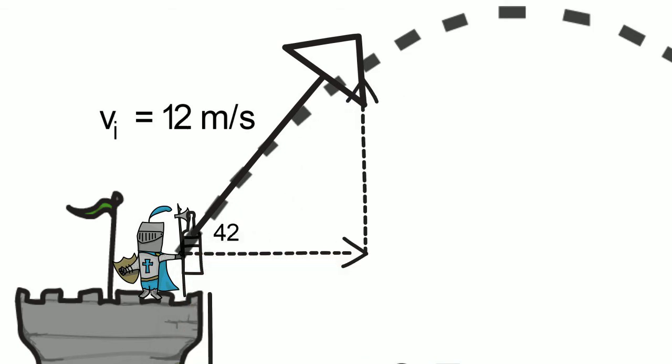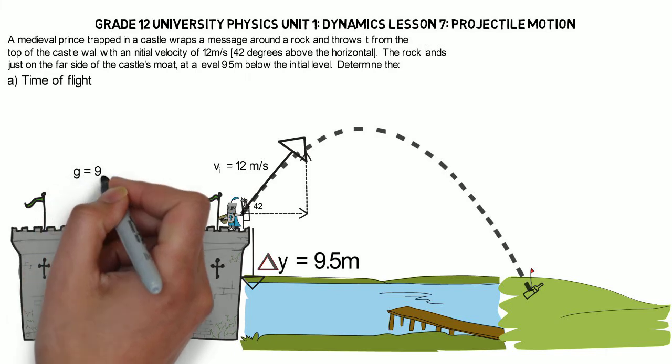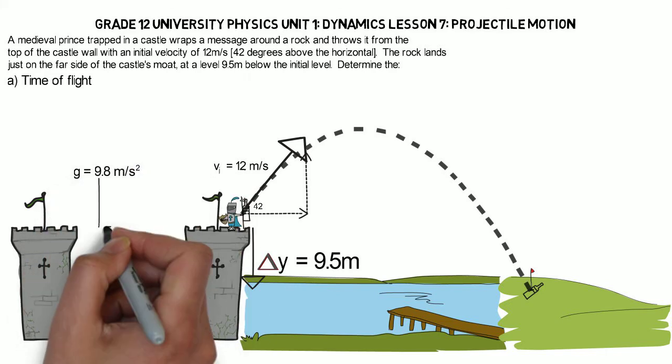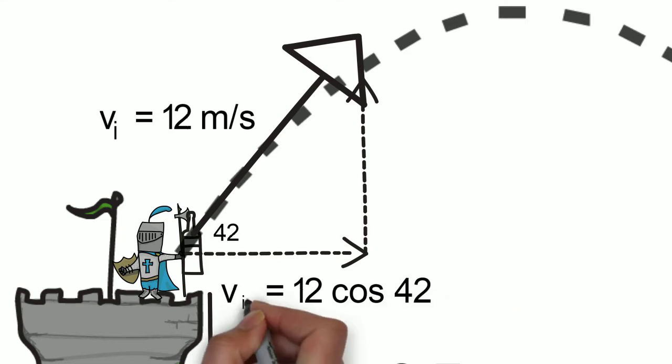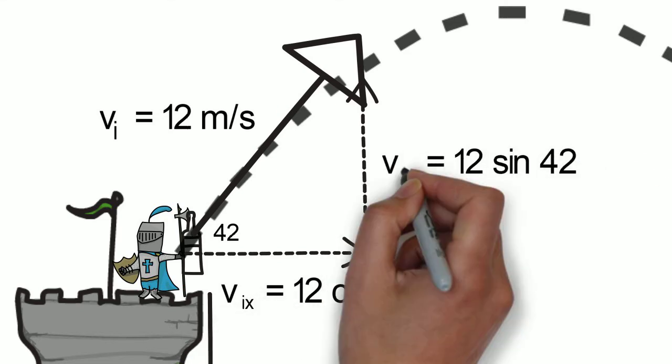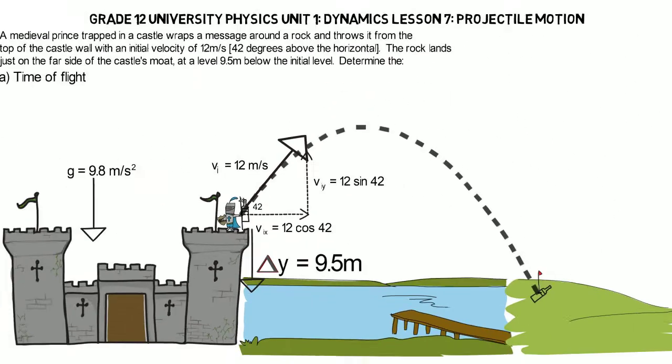And since we're on Earth, the acceleration due to gravity is 9.8 meters per second squared down. Now our initial velocity we can break up into X and Y components. Using our trig functions, we get our X and our Y components.